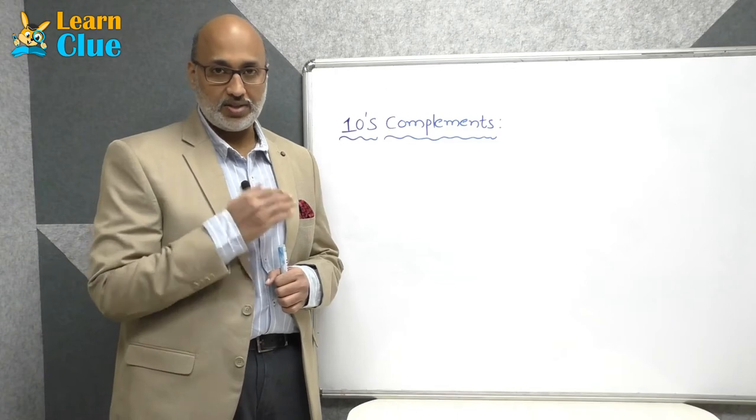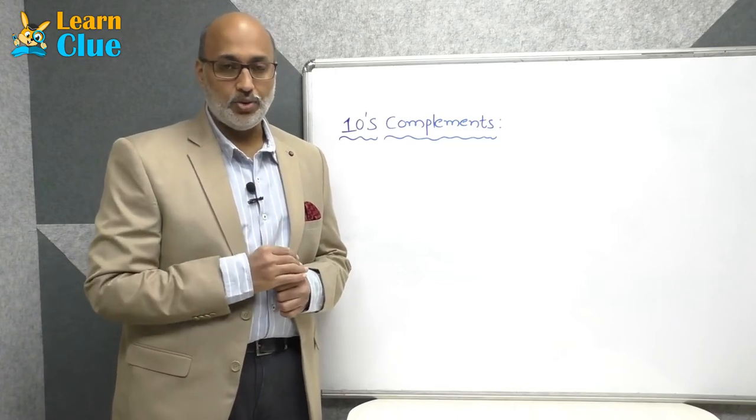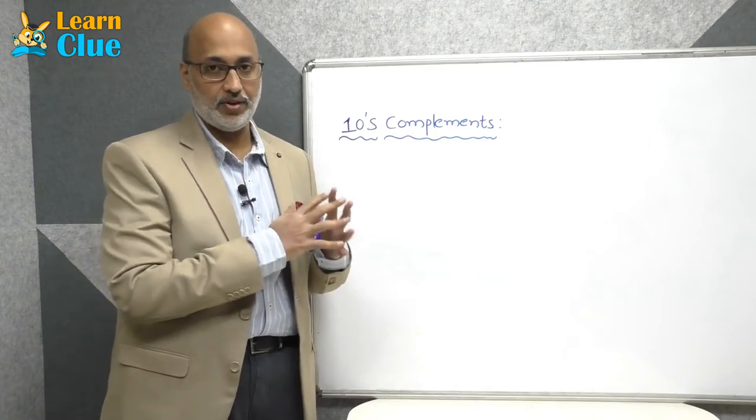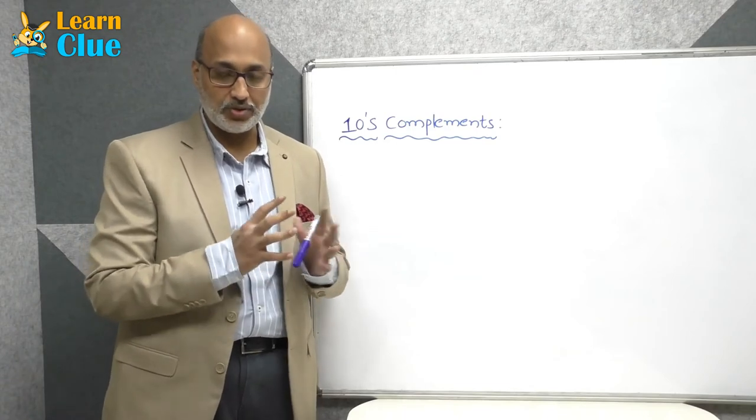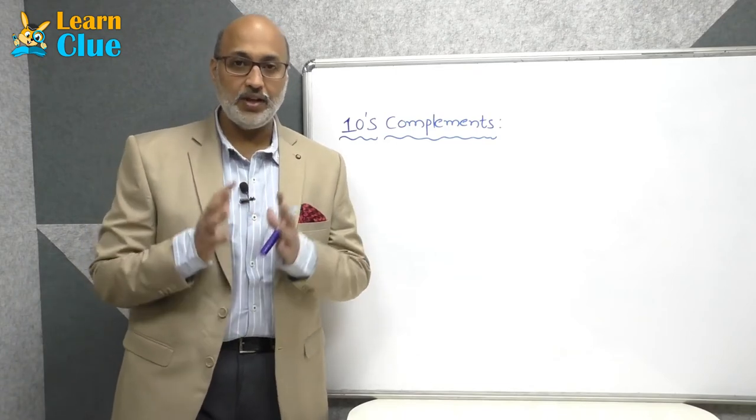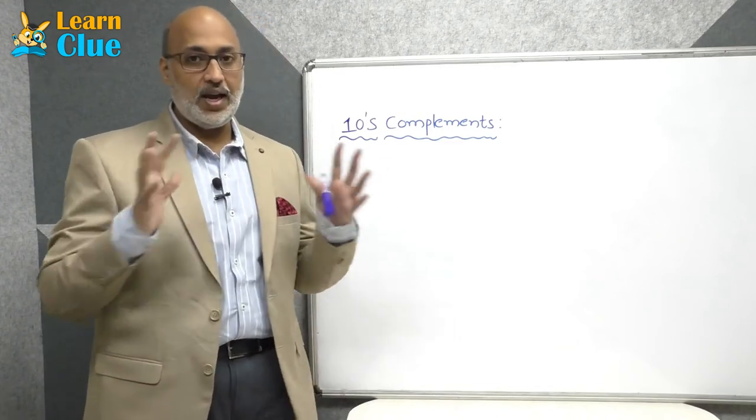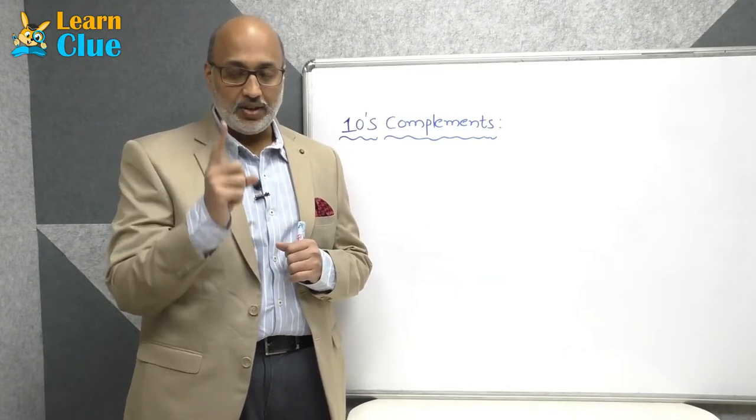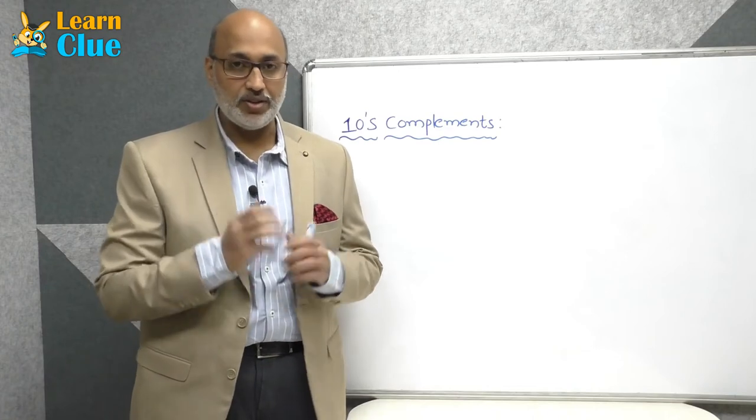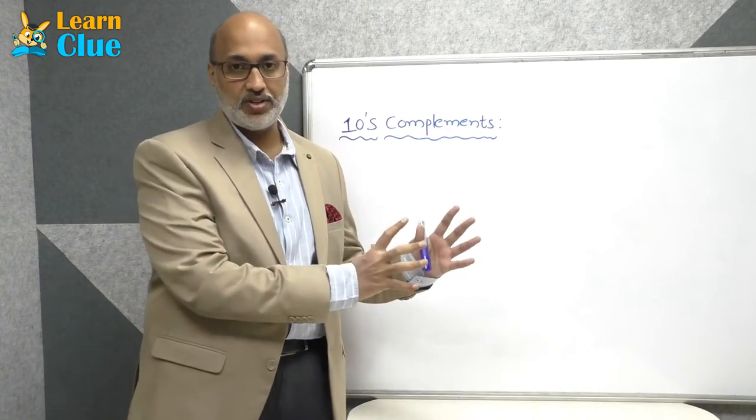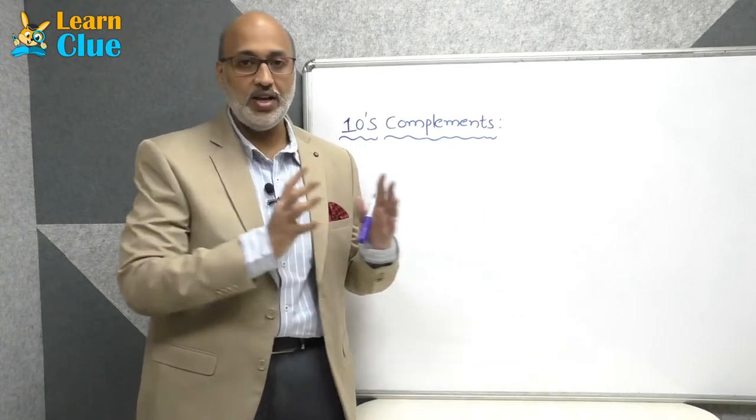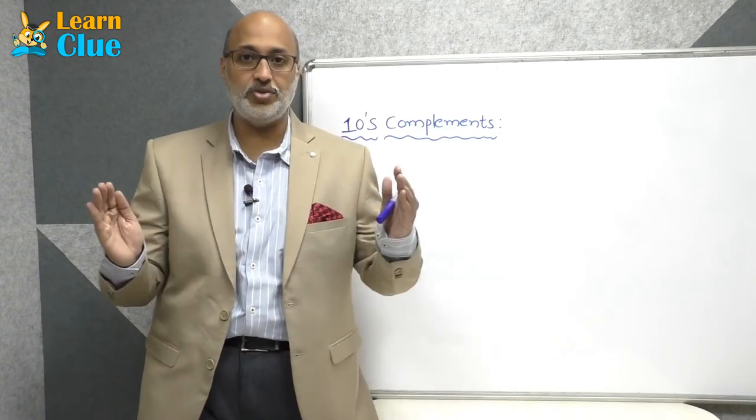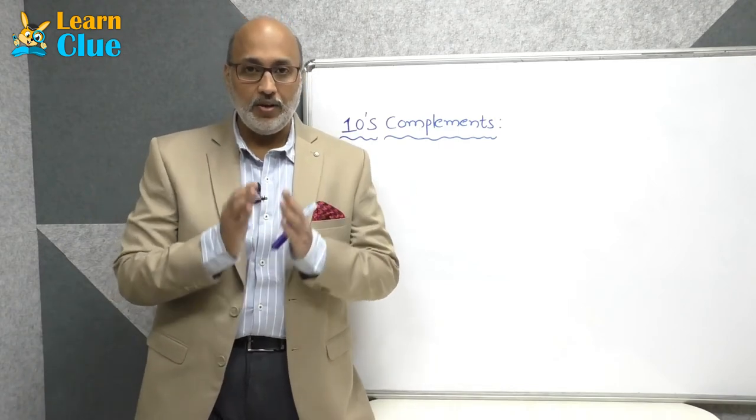Here also we will be having a new set of friends. Like in five complements, we have a friends group. Here also we will be having a new friends group. In entire abacus we will be having only two set of friends: one is small friends and one is big friends. Small friends is nothing but five complements friends, and tens complements friends we call as big friends. Here the number of friends will be more.